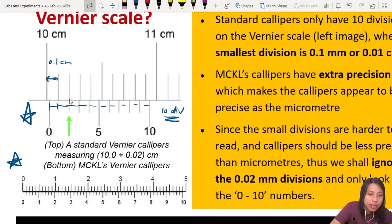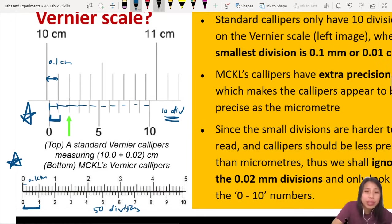oh, our one 0.1 cm is cut up into, I'm going to count. Never mind. I count already. 50 divisions. So, it's more precise. So, we really don't need that. So, that's why we just take this, which is the same as this. Okay? Our MCKL one, do like this.